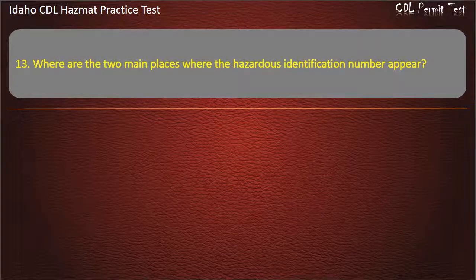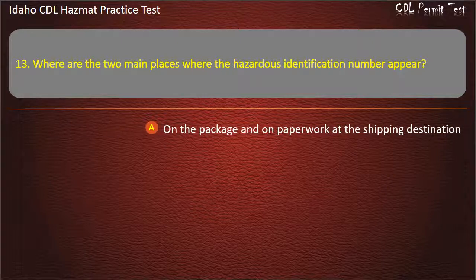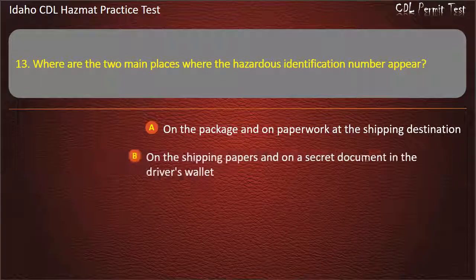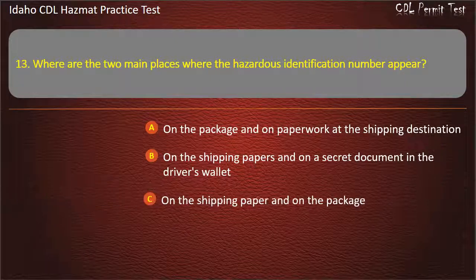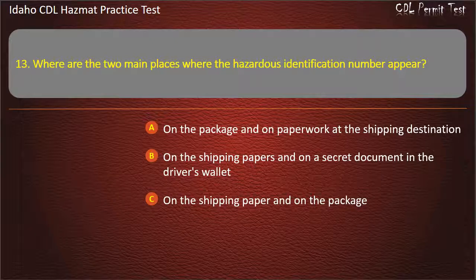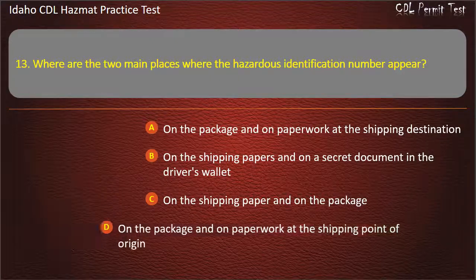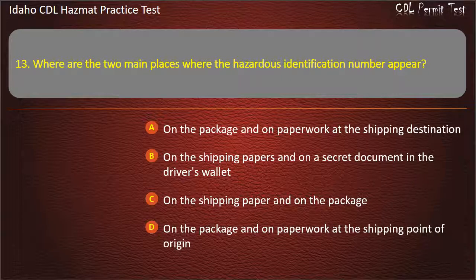Question 13. Where are the 2 main places where the hazardous identification number appears? On the package and on paperwork at the shipping destination. On the shipping papers and on a secret document in the driver's wallet. On the shipping paper and on the package. On the package and on paperwork at the shipping point of origin. Answer: On the shipping paper and on the package.